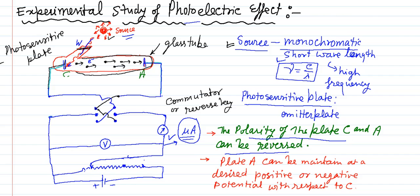This source I told you is a monochromatic source type, and the wavelength is so short. Why we are keeping short wavelength monochromatic source? Because of this short wavelength, if you see here this formula, ν is equal to C upon λ. If λ is more, frequency will be high. So keeping short wavelength you are getting high frequency light.